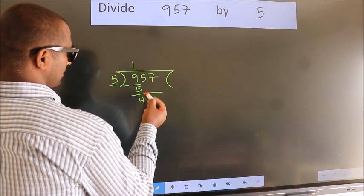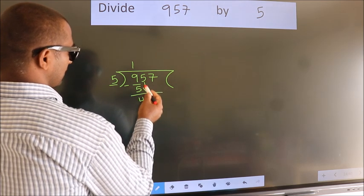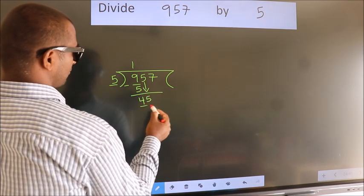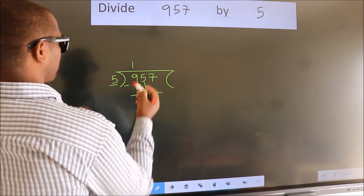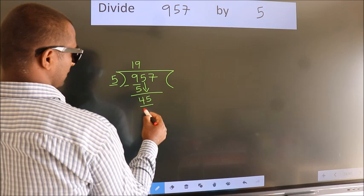After this, bring down the beside number. So, 5 down, making 45. When do we get 45 in the 5 table? 5 nines 45.